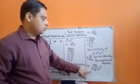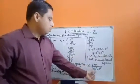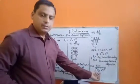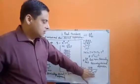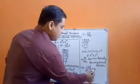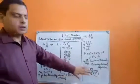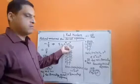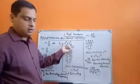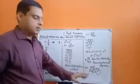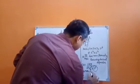Another example is 129 upon (2 power 2 into 5 power 7 into 7 power 5). Here 2 power m into 5 power n is present, but other than this we also have 7 power 5. That means the denominator should have only 2 and 5 as factors, not 7. Therefore it will have a non-terminating recurring decimal expansion.